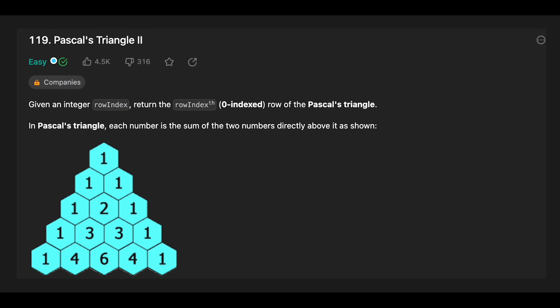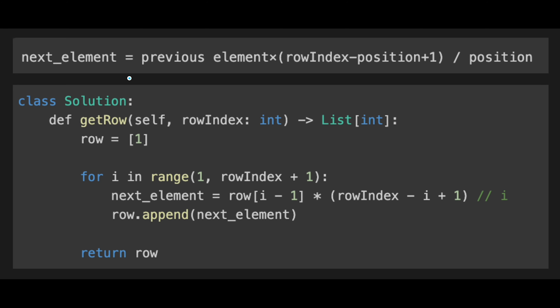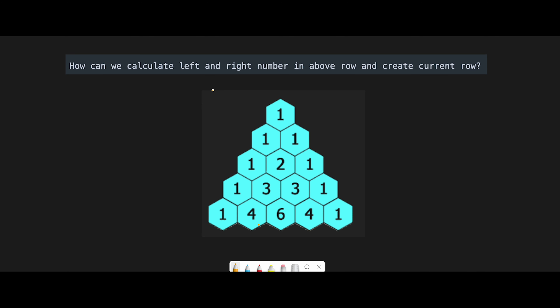Hey everyone, today we are going to solve the LeetCode question Pascal's Triangle 2. The key point to solve this question is how we can calculate the left and right number in the above row and create a current row. There is a formula for Pascal's Triangle, and based on the formula you can implement a solution, but in a real interview it's hard to come up with that formula, so I don't use this solution.